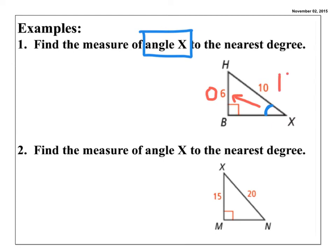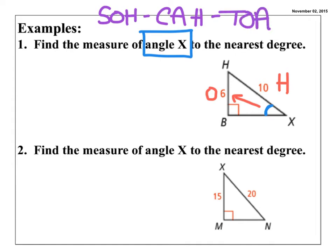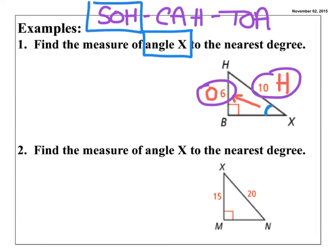We're going to need SOHCAHTOA to solve these problems. Given that I have the opposite and the hypotenuse, I am going to be using my sine function. So I write out my general equation: sine of X is equal to opposite over hypotenuse. Everything is the same so far — I found my reference angle, labeled my sides, determined I'm using sine, and wrote the general format of my equation.